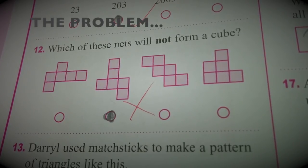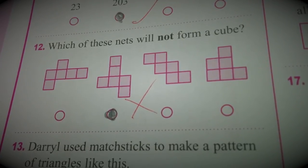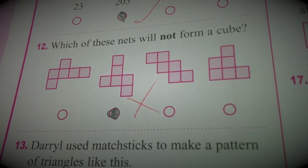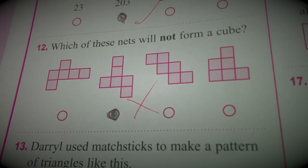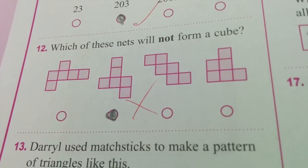In a lot of primary school maths, they have questions like this about nets of cubes and maybe even other polyhedra. So the question is, which of these nets will not form a cube? Different kinds of learners can learn in different ways.